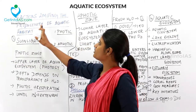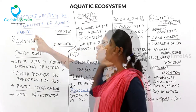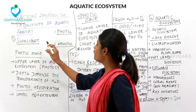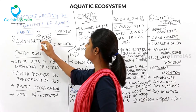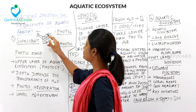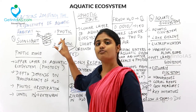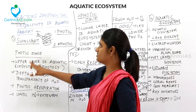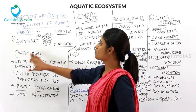Moving to the factors limiting the productivity of the aquatic habitat. The first factor is sunlight. In an aquatic system, sunlight reaches only certain zones. The zone where sunlight reaches is called the photic zone, and the zone where sunlight does not reach is the aphotic zone. The photic zone is the upper layer of the aquatic ecosystem.